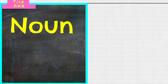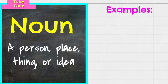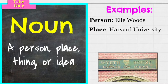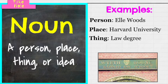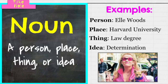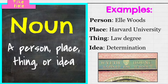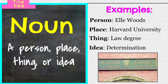Coming up is the tried-and-true part of speech you've learned since kindergarten: the noun. A noun is a person, place, thing — and maybe you know this one too — but it's also an idea. An example of a person would be Elle; a place, Harvard University; a thing, a law degree. The idea category might be new to some people. I like to think of an idea as something that can live inside of you — like determination, happiness, joyfulness, friendship, hope. All of these things you can have inside of you are nouns.